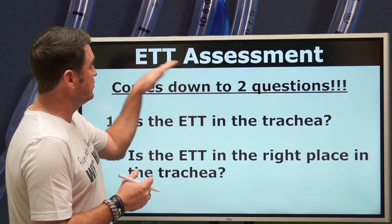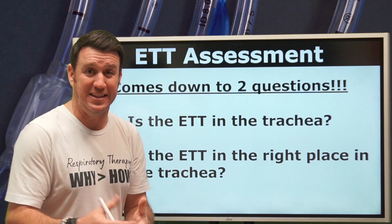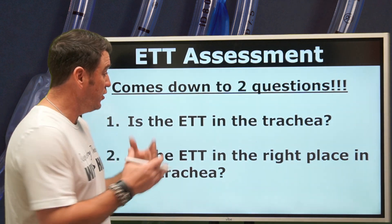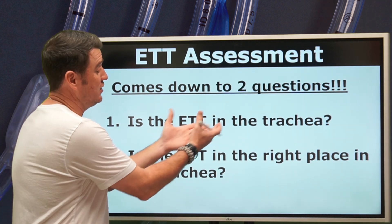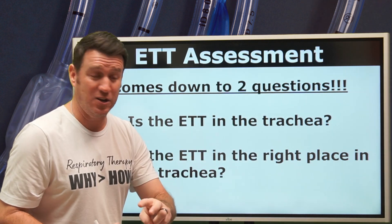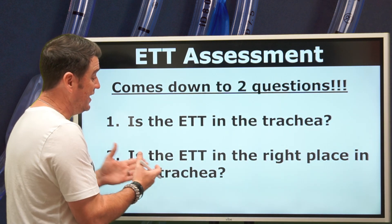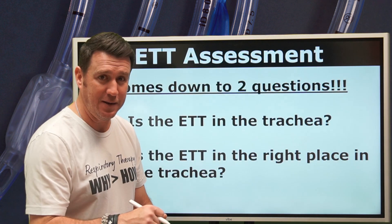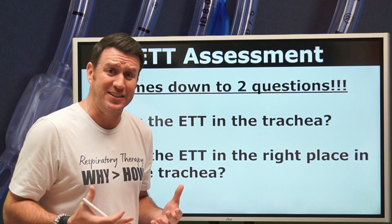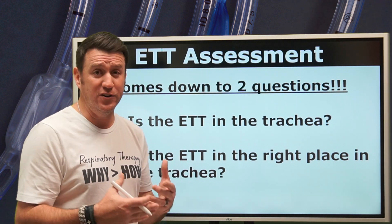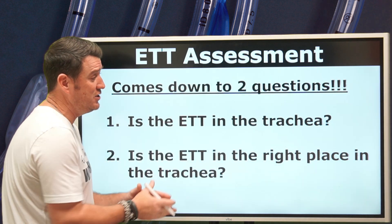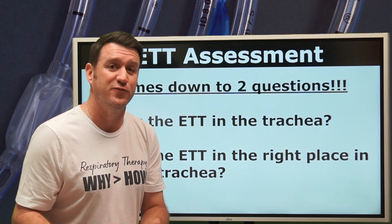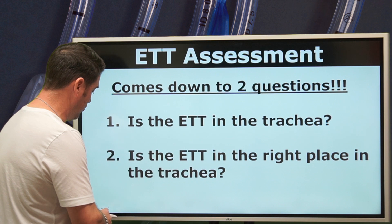When we talk about endotracheal tube assessment — abbreviated as ETT — it really comes down to two questions. First: is the endotracheal tube in the trachea? And second: once we know it's in the trachea, is it in the right place within the trachea? Failure to answer either question following an intubation can potentially lead to negative outcomes for your patient.